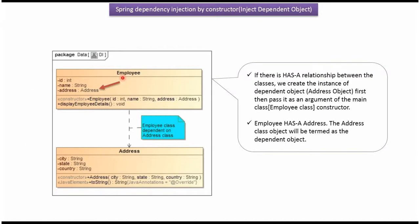Here you can see the Employee class. It has Address, so Address is called a dependent object. This relationship is called a has-a relationship. If a has-a relationship is there, first the dependent object will be created and it will be passed to the main class constructor. In this case the dependent object is Address and the main class is Employee.